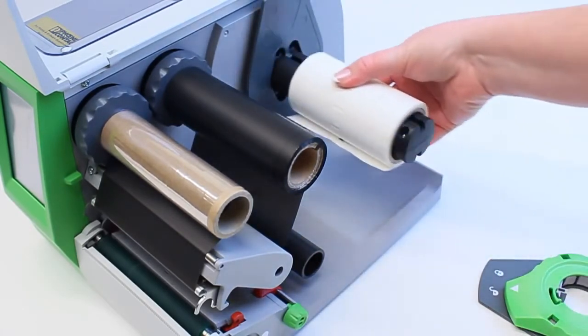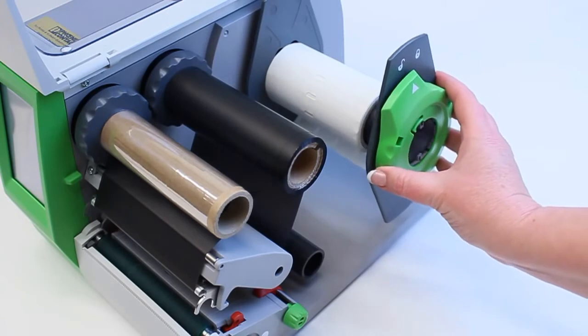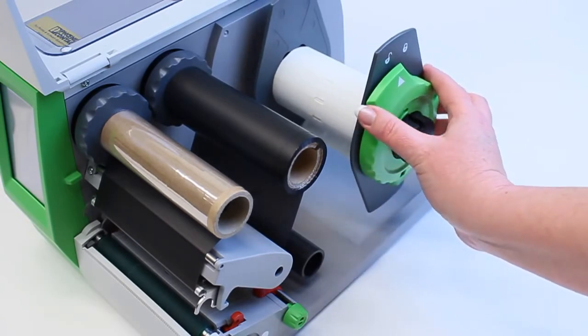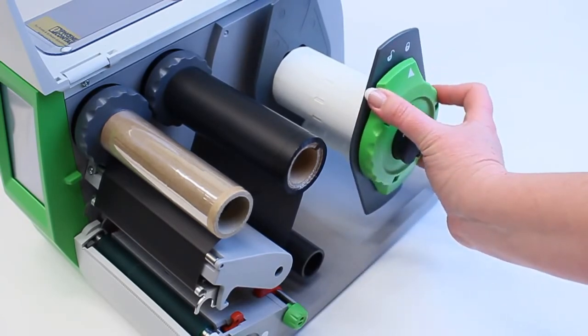Place the material on the spindle and slide the wing back on, pushing towards the material. Twist the dial to lock into place.